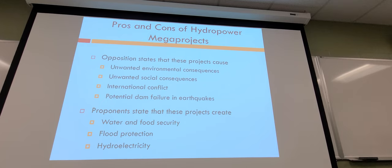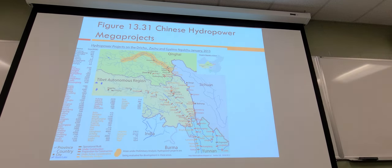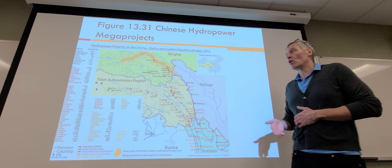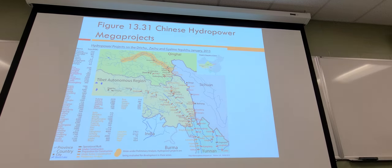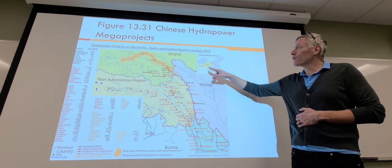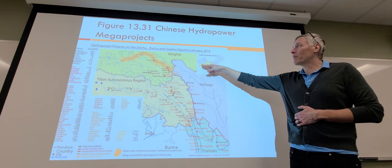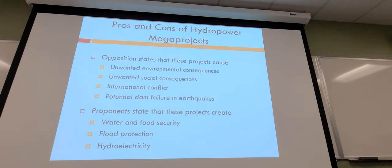There are pros and cons to mega projects. International conflict around rivers and dams is common because a major river often goes through many different countries. Rivers in dry regions tend to generate more conflict because of water scarcity. In China's case, although these areas have different ethnicities and languages, they're all part of one country, so there's not a lot of political strife about the decision-making process.